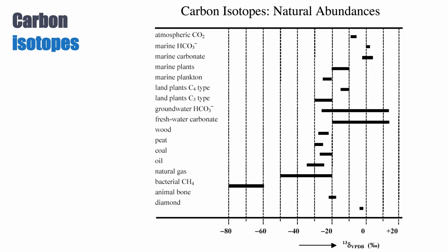It gets really interesting when you look at things like peat, wood, or coal, because they come from organic tissues. They tend to be more negative in their carbon isotope composition. Things like oil and natural gas are also quite negative — plotting around minus 20 to minus 40.